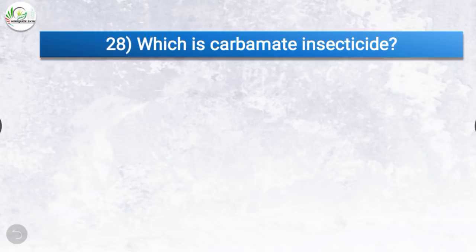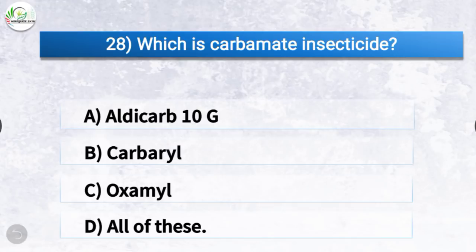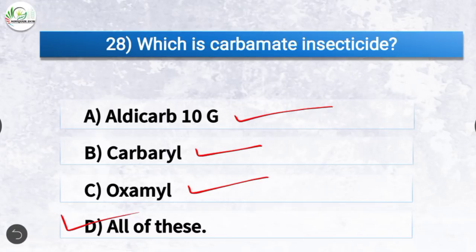Question number 28: Which is a carbamate insecticide? The correct answer is option D, all of these — which includes aldicarb 10G, carbaryl, and oxamyl. All three are carbamate insecticides.